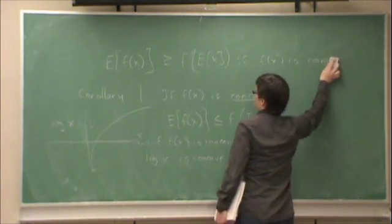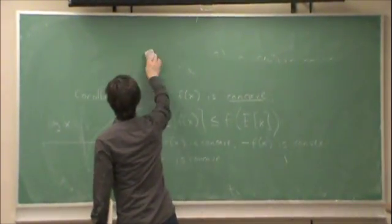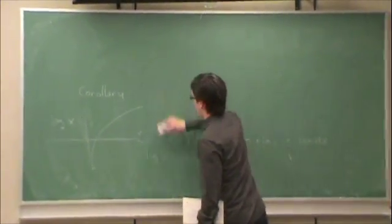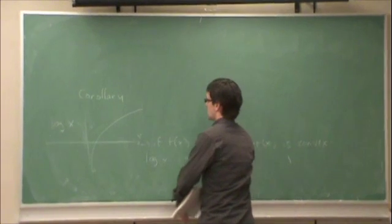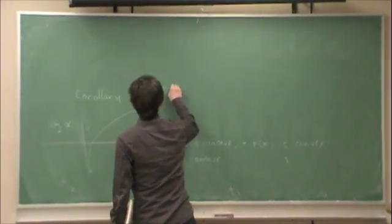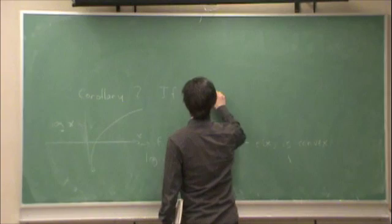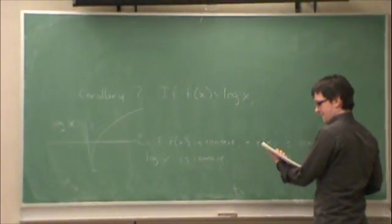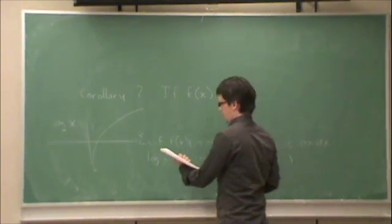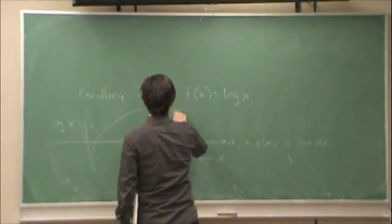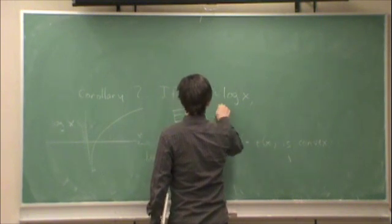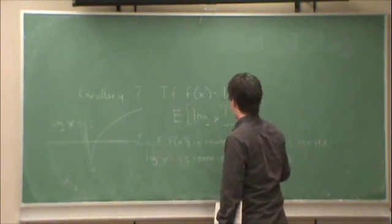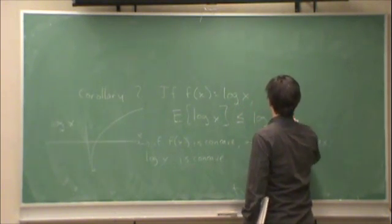Which leads me to my second corollary. Corollary 2. If f of x is equal to log x, then the expected value of log x is less than or equal to log of the expected value of x.